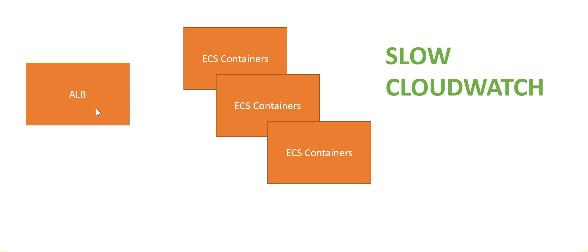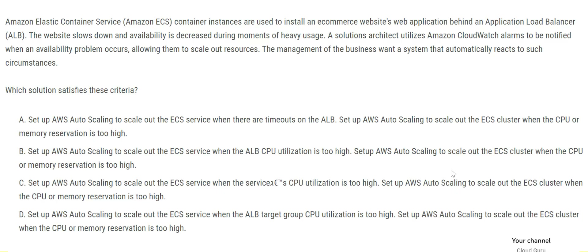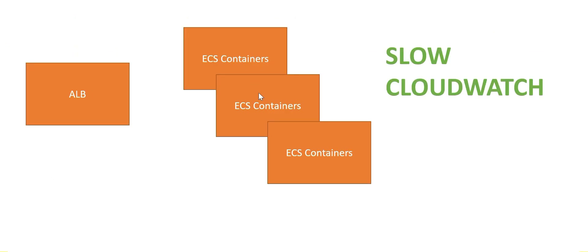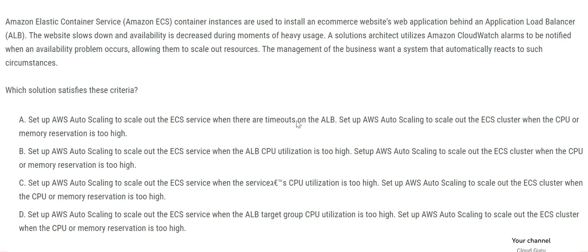The ALB is just like a person serving food in a canteen — what does he have to do with adding more people to your project? The spot of slowness is not load balancing; it is ECS, because if the service is not able to handle the load with the number of containers it has, that's the issue. Option A triggers on ALB timeout, option B triggers on ALB CPU utilization — so A and B are ruled out.